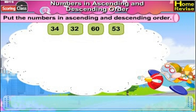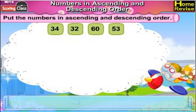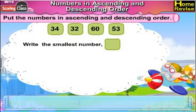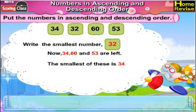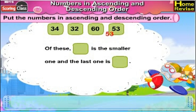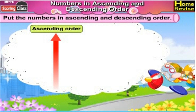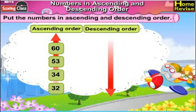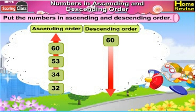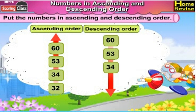Put the numbers in ascending and descending order. The given numbers are 34, 32, 60, 53. Write the smallest number — that is 32. Now 34, 60, and 53 are left. The smallest of these is 34. Now 60 and 53 are left; 53 is the smaller one and the last one is 60. So the ascending order is 32, 34, 53, 60. And the descending order would be 60, 53, 34, 32.